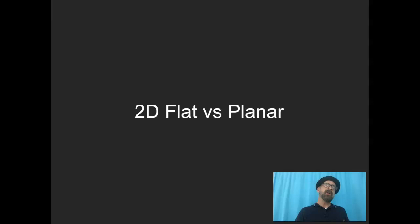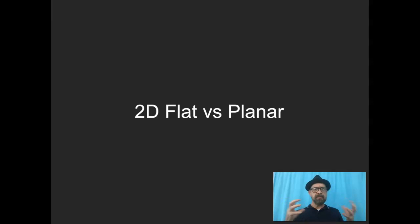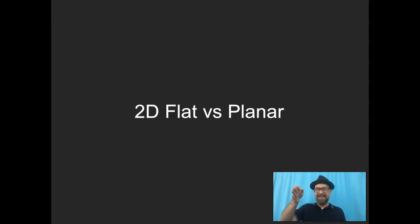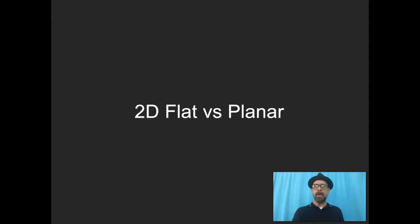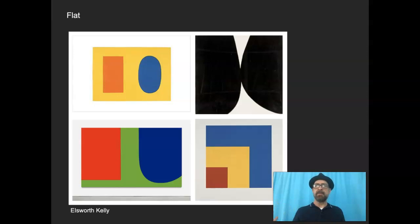We need to talk about flat shapes and planar shapes, and decorative versus plastic — this has to do with how shape and space interact. Flat shapes stress the two-dimensional surface, while planar shapes take that same flat shape and tilt it to create the suggestion of space, with overlapping creating the illusion of depth. Here are some Ellsworth Kelly shapes clearly meant to be flat — not trying to do anything other than announce their presence on a flat surface.